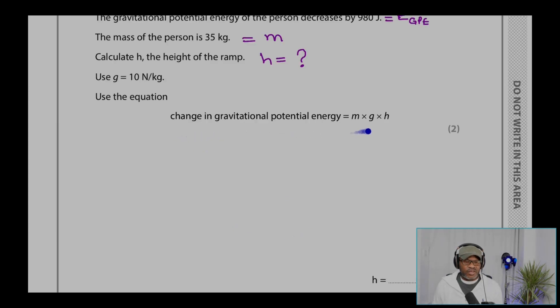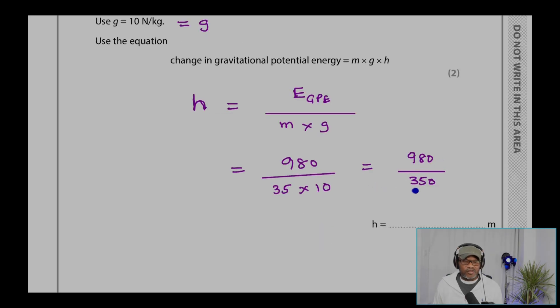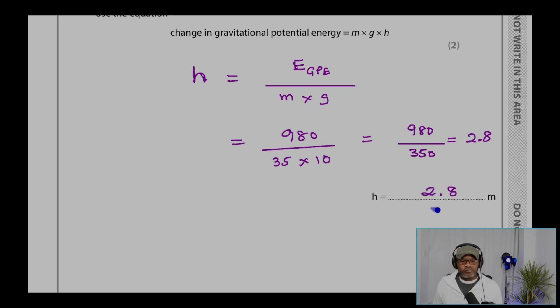And we're to use that equation. G is the gravitational field strength, and H is E over Mg. We need to populate that with the values: 980 for energy divided by 35 for mass and 10 for gravitational field strength. And that is 980 over 350, and that gives 2.8. Therefore, H is 2.8 meters.